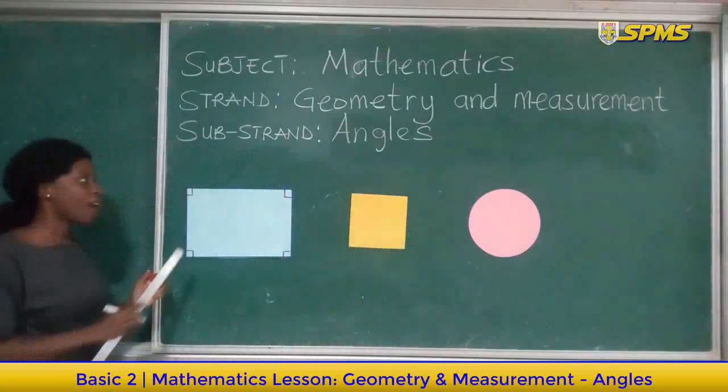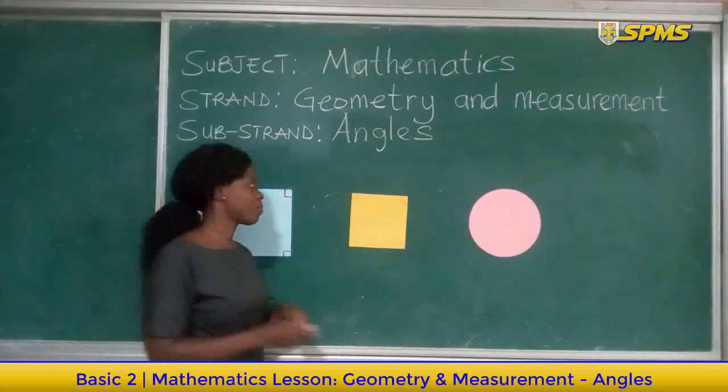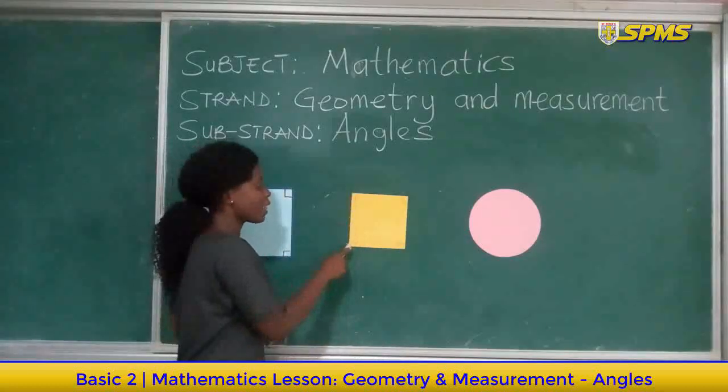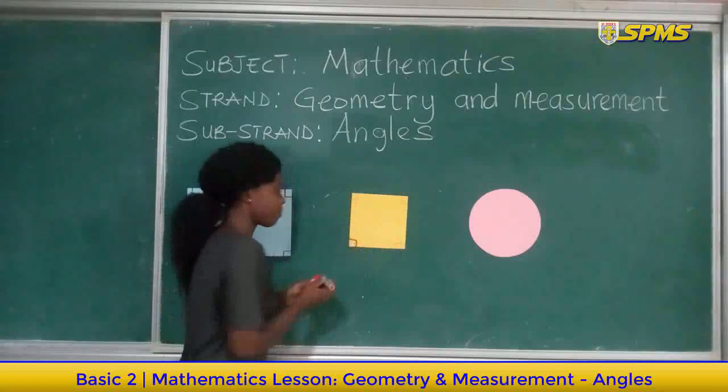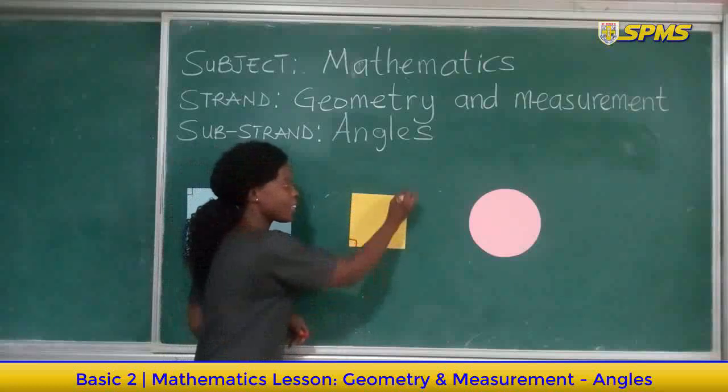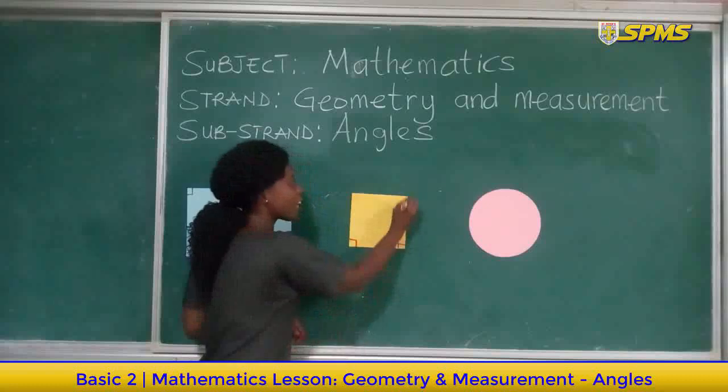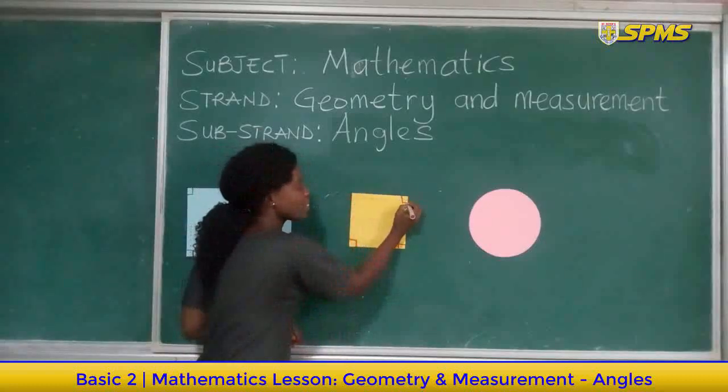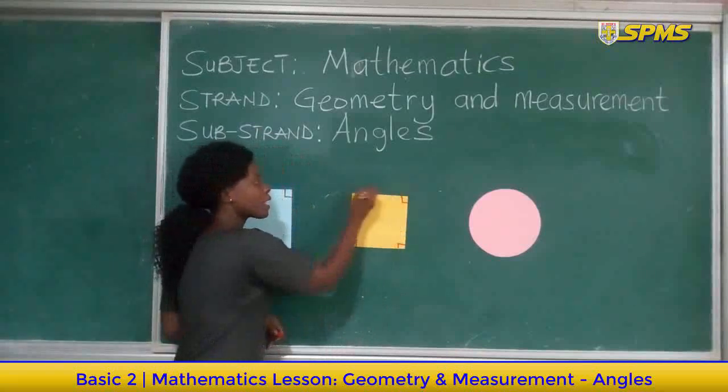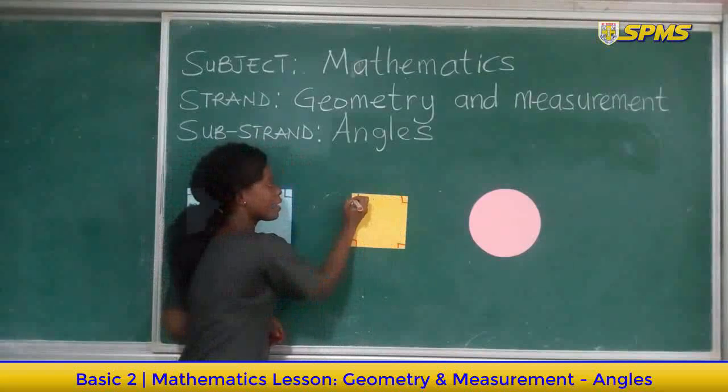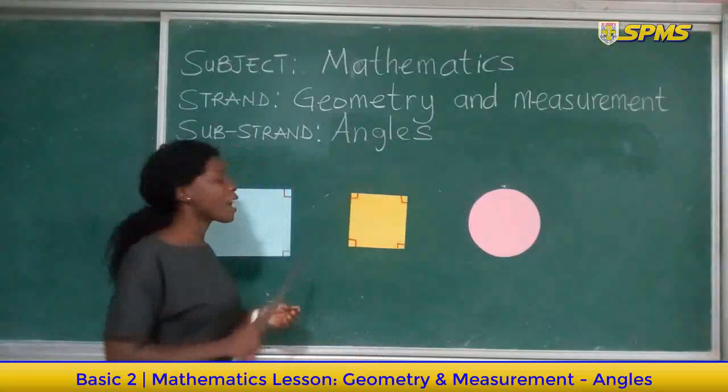Good, I have my angles in the rectangle. Now let's look at the square. This line and this one meet at this point. This and that one also meet here. We have this line and the top line meeting at this point, and the last angle - this line and the down one also meet here. So I have four angles in the square.